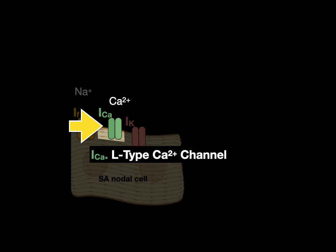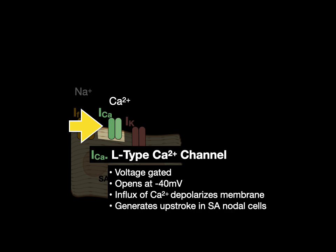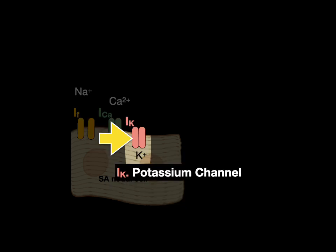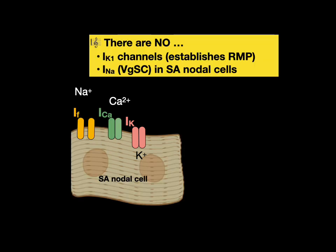The ICa, the calcium current, occurs through L-type calcium channels. They're voltage gated, open at negative 40 millivolts, allow an influx of calcium that depolarizes the membrane, and generate the upstroke in SA nodal cells, then close at positive 20 millivolts. The IK, the potassium current, occurs through the potassium channels — also voltage gated — opening at positive 20 millivolts, allowing an efflux of potassium that repolarizes the membrane, then closing at negative 60 millivolts. Notably, there are no IK1 channels (seen in other cells to establish resting membrane potential) and no INa voltage-gated sodium channels in SA nodal cells.